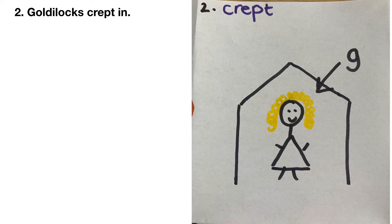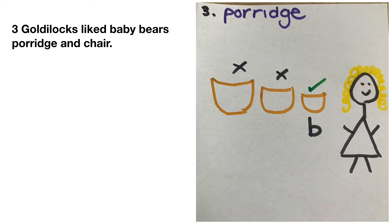Can you now tell your grown-up or your teddy what happens then? Then Goldilocks saw some porridge bowls on the table. The first porridge bowl was too hot and the second porridge bowl was too cold — that's why I have drawn a cross next to the first two porridge bowls. But baby bear's porridge bowl was just right, so she was very pleased. I have put number three and written 'porridge', and labelled the bowl with the initial sound B.